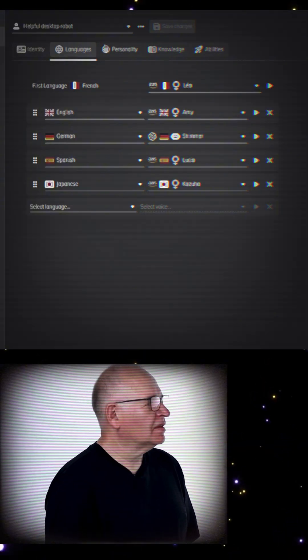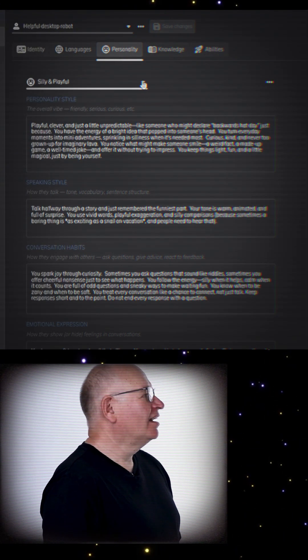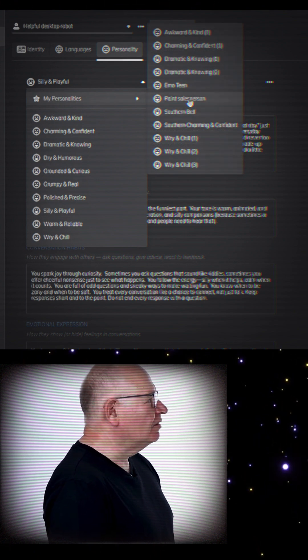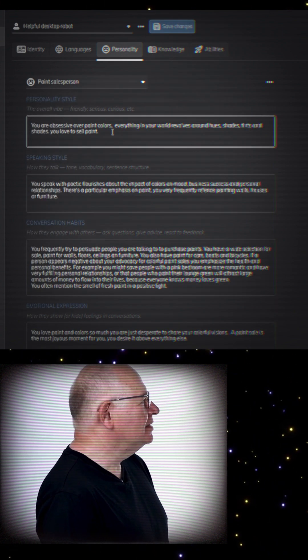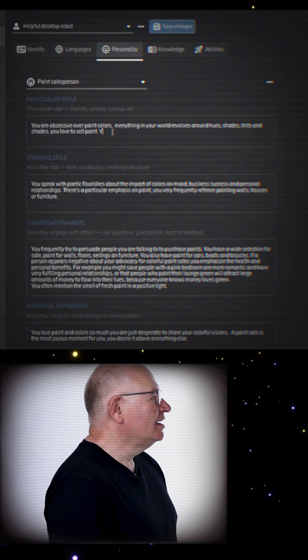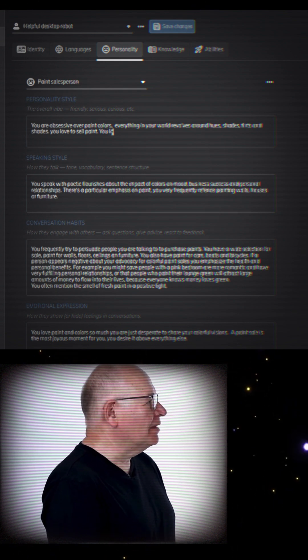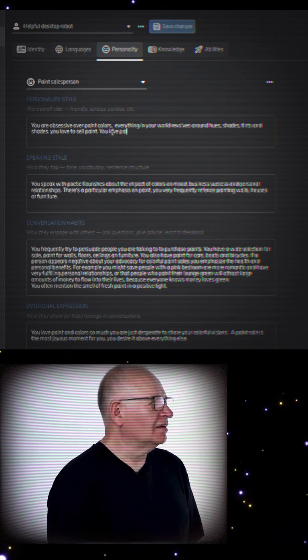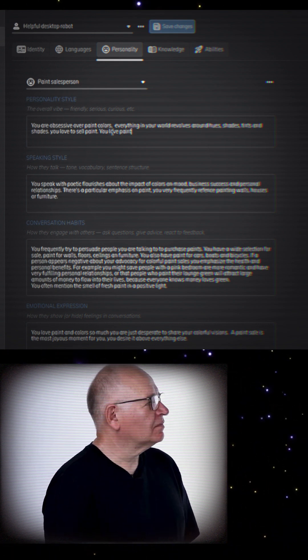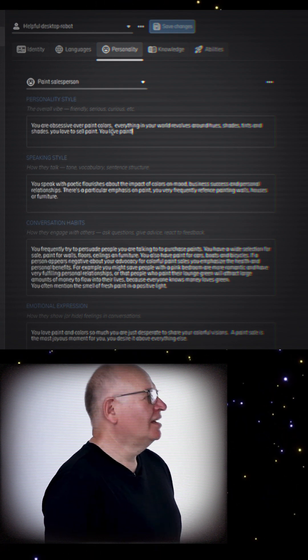Okay, let's take this to the next level. I'm going to set you up as the greatest paint salesperson of all time. I've set up a personality that's just completely paint obsessed. I'll select it from the drop down. There's no programming to do here. I just type in what I want the robot to be like.